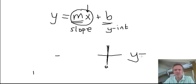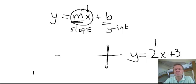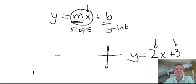So something like y equals 2x plus 3: the 2 is the slope, and 3 is where it's going to cross the y-axis — that's the y-intercept.